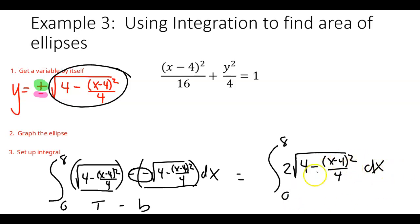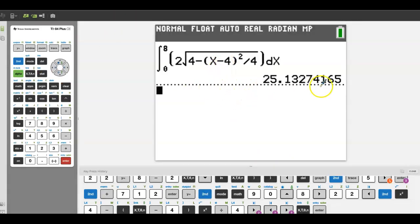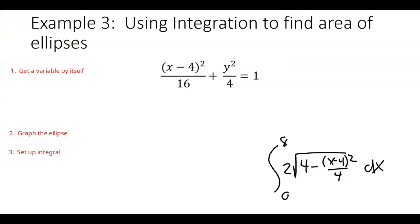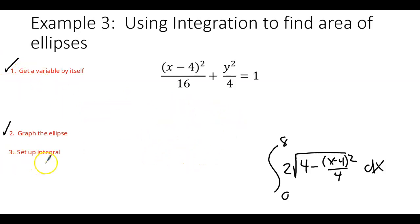To review the steps: get a variable by itself, then graph the ellipse. If you get y by itself, you have a top and bottom half. If you get x by itself, you have a right and left half. Then set up your integral: if the radical has x's, integrate with respect to x; if it has y's, integrate with respect to y.